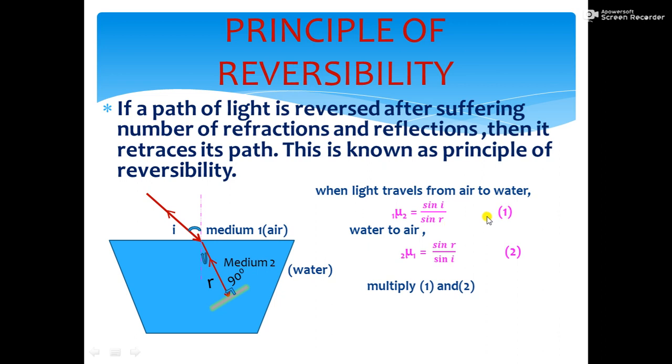Multiply equation 1 and 2, mu 2 1 into mu 1 2. That means, refractive index of medium 2 multiplied with refractive index of medium 1 is equal to sin i by sin r into sin r by sin i. Sin r, sin r cancel. Sin i, sin i cancel. Answer is 1.